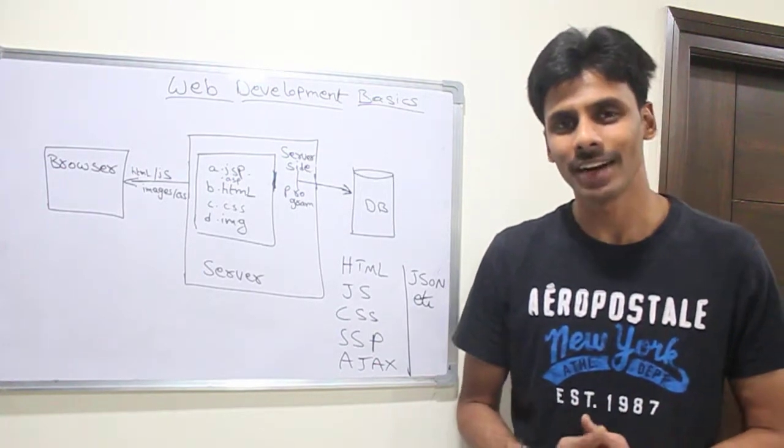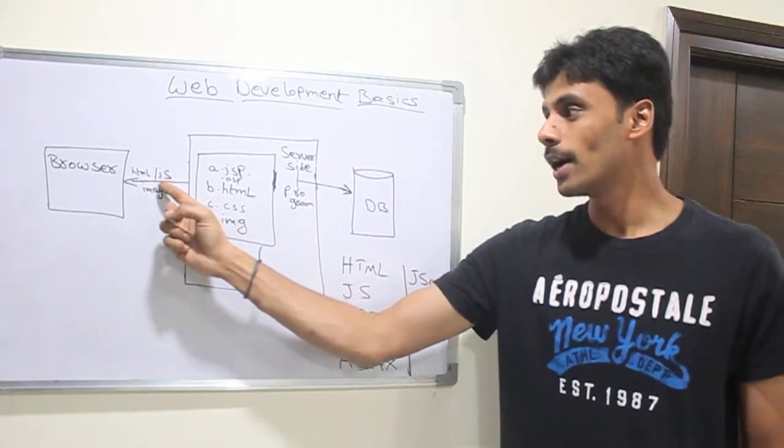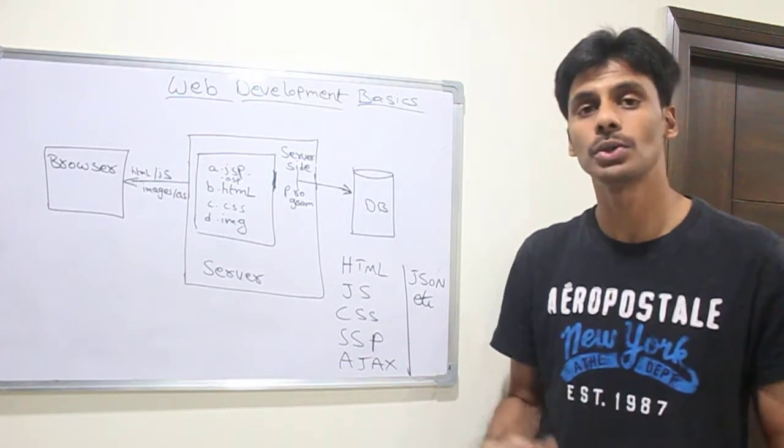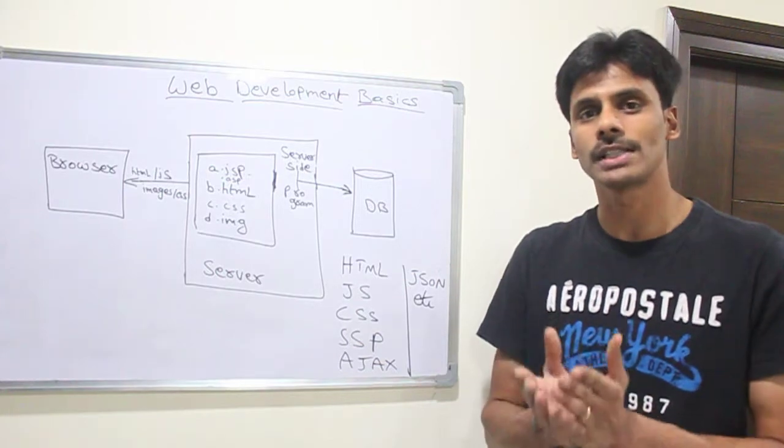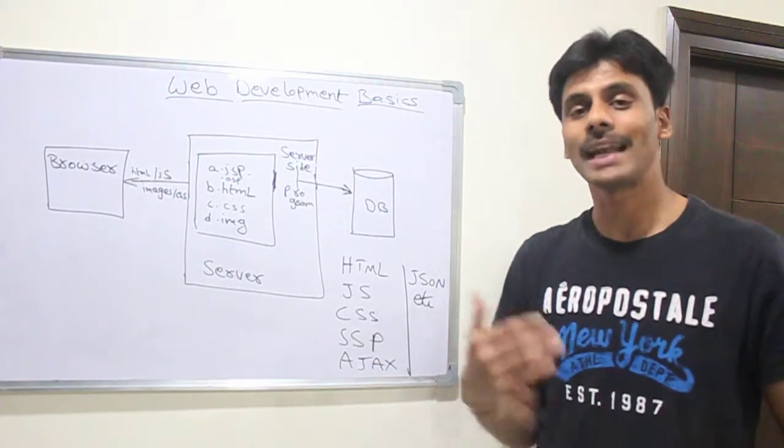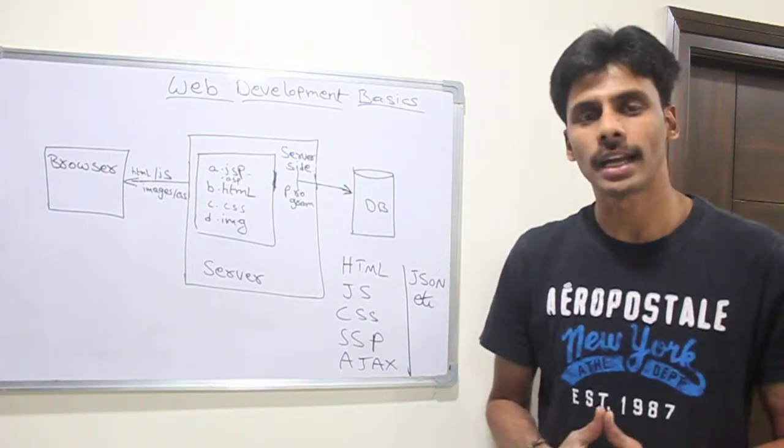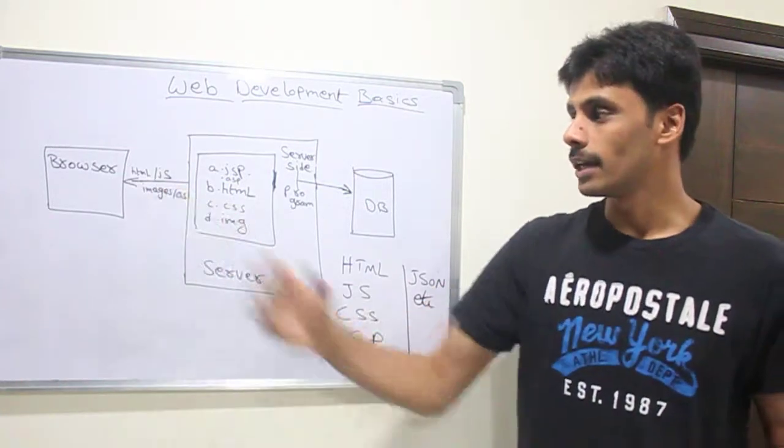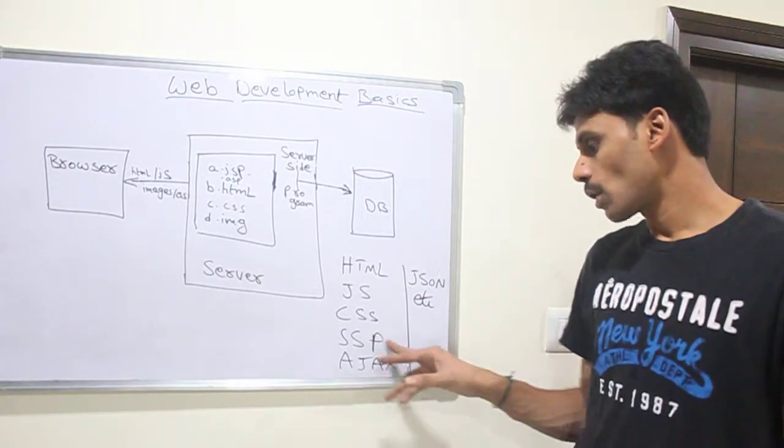A browser understands HTML and also it can understand JavaScript. JavaScript allows you to do some browser-side programming and browser-side validation. That's where it all started. JavaScript was initially used for doing some client-side validations - if he enters a wrong email ID, if he doesn't enter a mandatory field, and all those validations we were doing on the client-side using JavaScript. But as the web evolved with the introduction of Ajax...